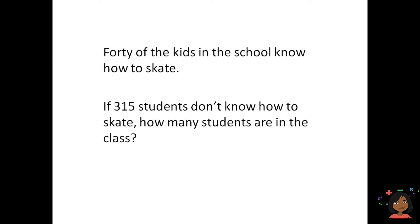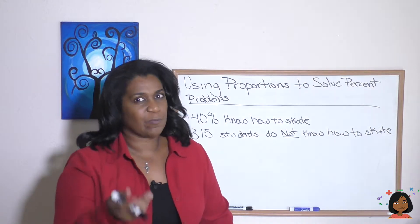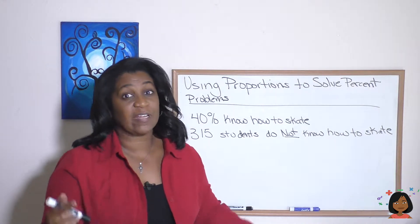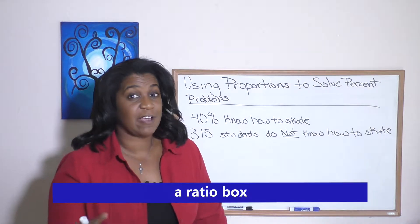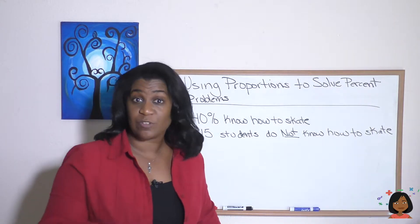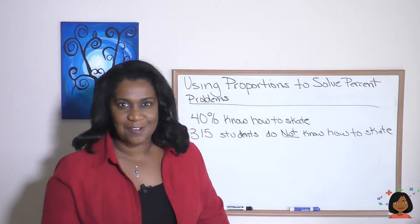40% of the students in the school know how to skate. If 315 students do not know how to skate, how many students are in the class? When we've used proportions in the past, we remember proportions are equal ratios. We've used something called a ratio box to figure out our answer, and we're going to use one here too, but it's going to be a little bit different.